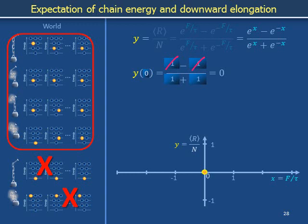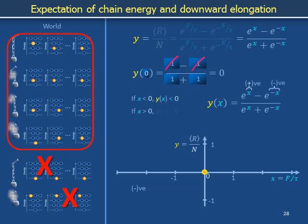Let us show that the origin is in fact a place through which the plot of y on x changes sign. If x is less than zero, then e to the x is the exponential of a negative number and e to the minus x is the exponential of a positive number. The exponential of a negative number is smaller than the exponential of a positive number, so the second term in the numerator wins, and y on x is greater than zero when x is greater than zero. If x is greater than zero, then e to the x is the exponential of a positive number, while e to the minus x is the exponential of a negative number. The exponential of a positive number is bigger than the exponential of a negative number, so this time the first term in the numerator wins, and y on x is greater than zero when x is greater than zero.